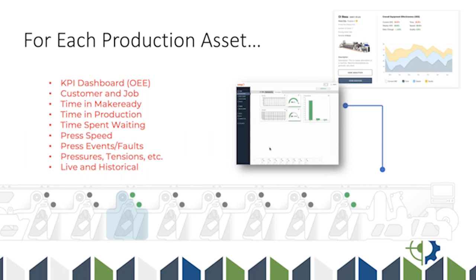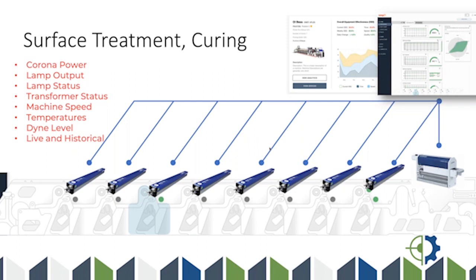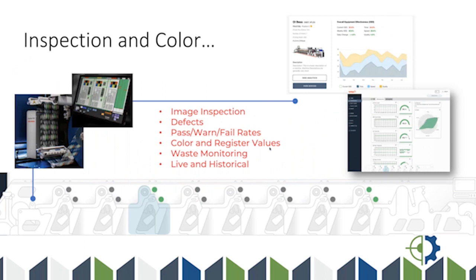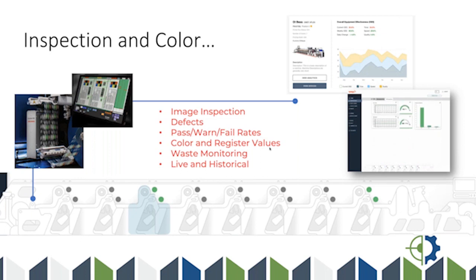For every connected peripheral on machines — and these subsystems often have as much to do with quality as the machine itself — we can pull in and aggregate data. The UV curing systems, corona treatment systems — they all have data: lamp power status and other things they're doing that could lead to a climbing quality or defect rate. Just understanding what's going on with connected peripherals is also of interest — inspection systems, color systems — we can merge in information from image inspection, defect rates, monitor that, and combine it with other press data.